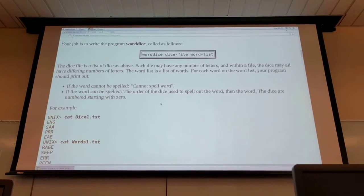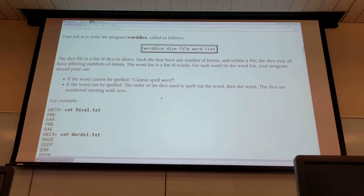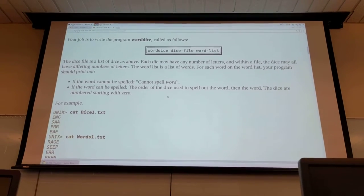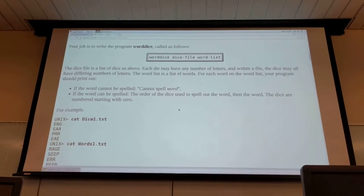If the word can be spelled the order of the die used to spell out the words should be printed along with the name of the word and the dies are indexed starting from zero being the first die in the die file.